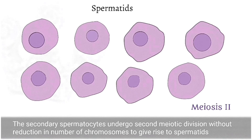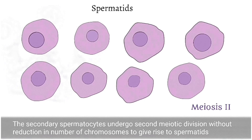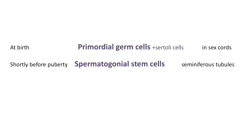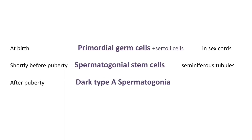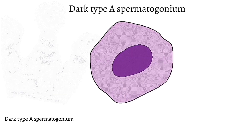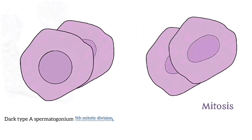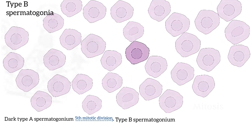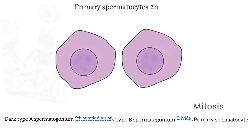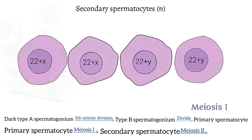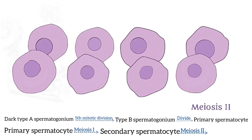Before moving on to spermiogenesis, let's quickly recall what we have seen so far. At birth, we have the primordial germ cells and the Sertoli cells in the sex cords. Shortly before puberty, spermatogonial stem cells are formed, and after puberty at regular intervals, some of these stem cells mature to form dark type A spermatogonia. These divide through multiple mitoses, with the fifth mitotic division forming type B spermatogonia. Type B spermatogonia divide to form 2N primary spermatocytes, which undergo the first meiotic division to form N secondary spermatocytes, and finally after the second meiotic division they form the spermatids.